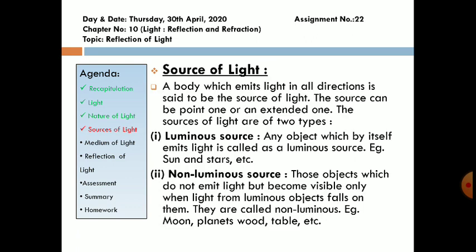Sources of light. A body which emit light in all directions is said to be a source of light. The source can be a point one or an extended one. The source of light are of two types: luminous source and non-luminous source.